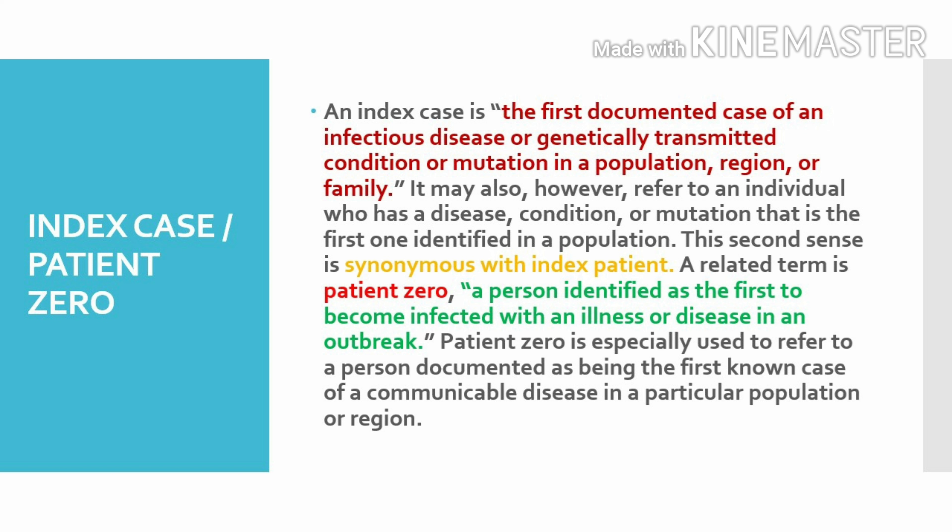Next term: index case. This is the first documented case of an infectious disease or genetically transmitted condition in a population, region, or family. A related term is patient zero — a person identified as the first to become infected with an illness or disease in an outbreak. Patient zero is especially used to refer to the first known case of a communicable disease in a particular population or region.